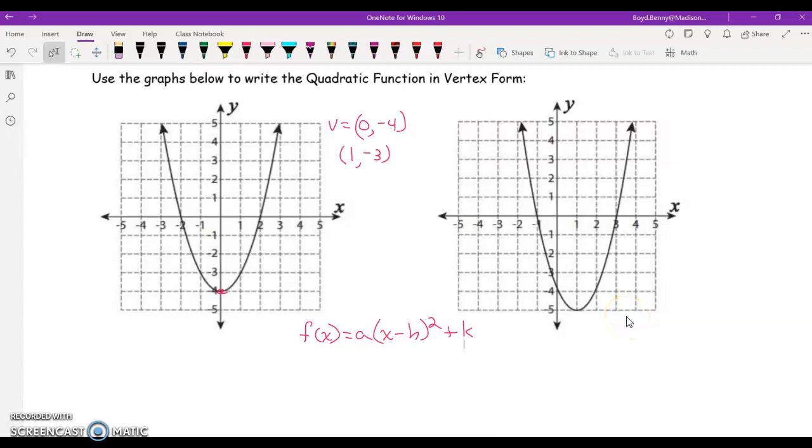All right, so, I know my h and my k, that's the x and the y of the vertex. So, I'm going to substitute 0 here. And I'm going to substitute negative 4 here for the k. We're solving for a.